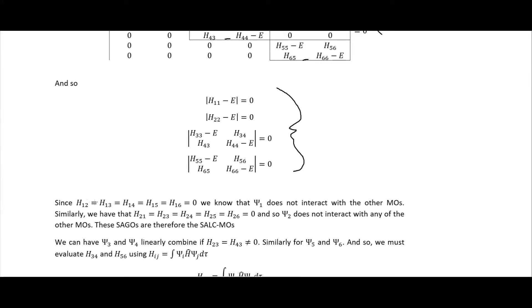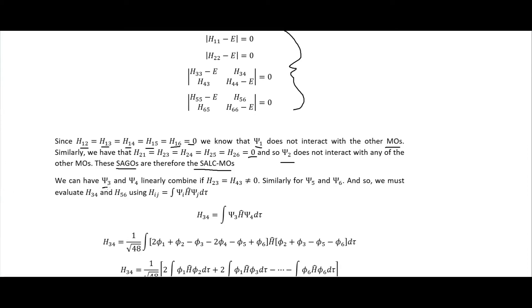Since H₁₂ = H₁₃ = H₁₄ = H₁₅ = H₁₆ = 0, ψ₁ does not interact with the other molecular orbitals. Similarly, H₂₁ = H₂₃ = 0 means ψ₂ does not interact with the others, so these SAGOs are themselves SALC MOs. Then ψ₃ and ψ₄ linearly combine if H₃₄ ≠ 0, and the same applies for ψ₅ and ψ₆.